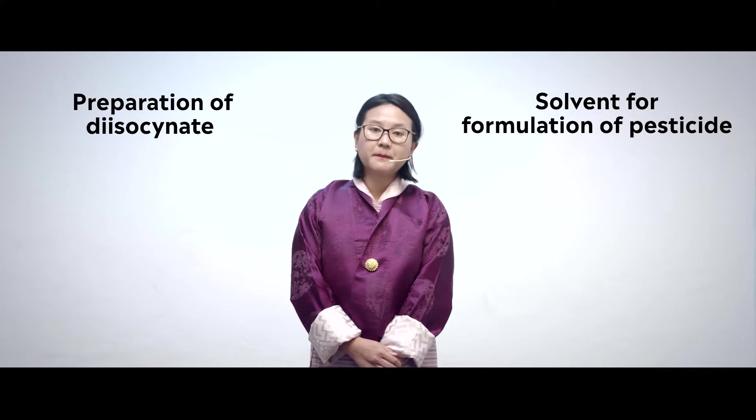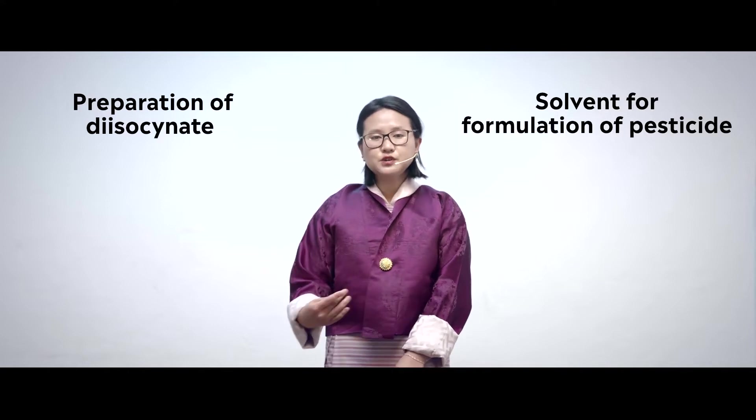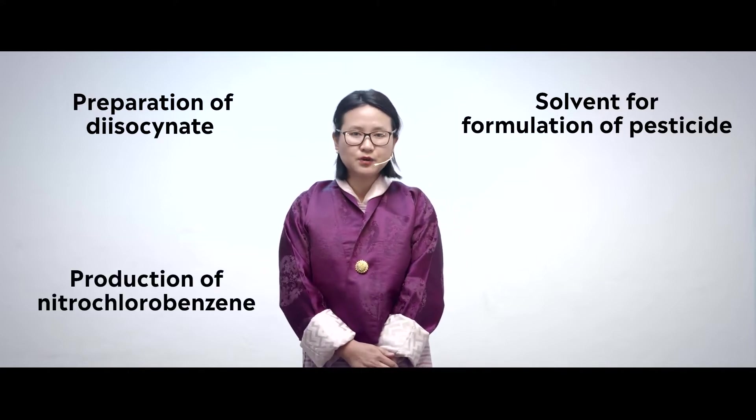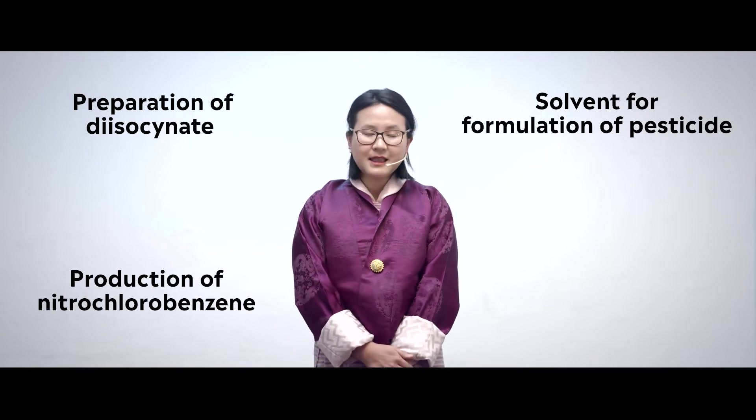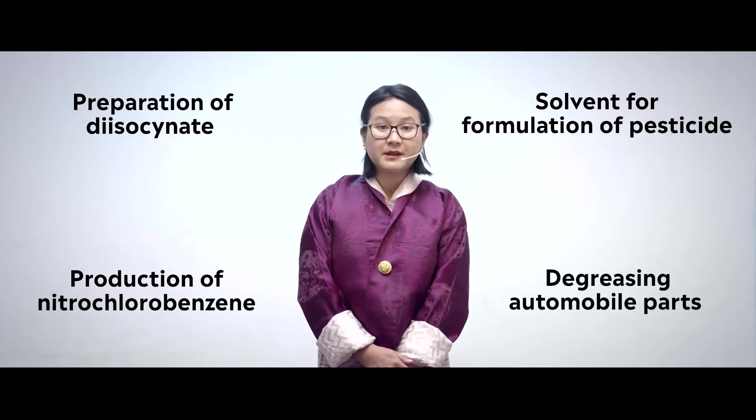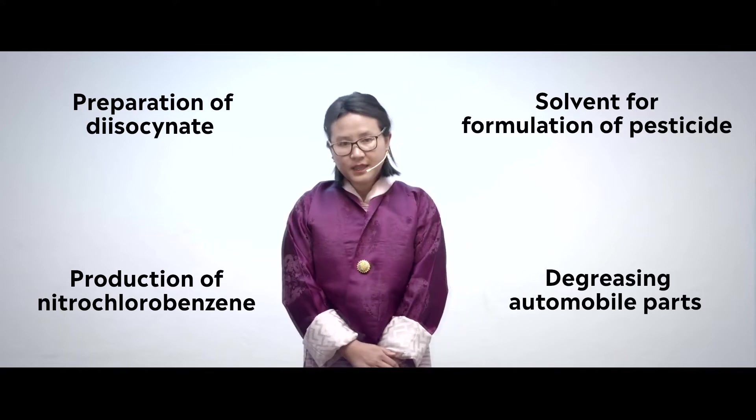Today, chlorobenzene is used to prepare diisocyanate. It is also used as a solvent for formulation of pesticides, for preparation of nitrochlorobenzene, and for degreasing automobile parts. We know that chlorobenzene doesn't occur naturally in the environment; however, it is being used in our day-to-day life.